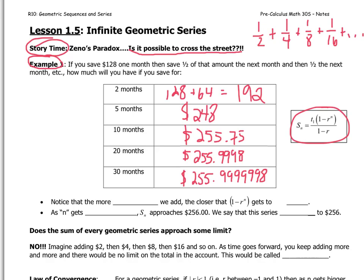All right, plugging our formula in, I get this. After five months, $248. After 10 months, $255.75. 20 months, we don't gain very much between 10 and 20, $255.999. After 30 months, $255.99999. In fact, if you keep going, you're just going to get a lot of 9s.